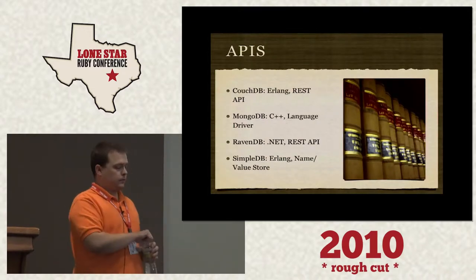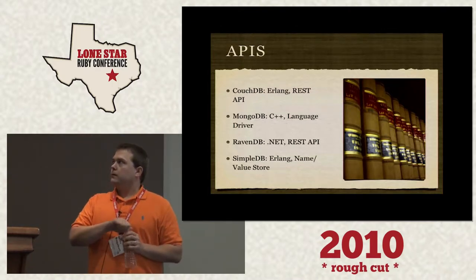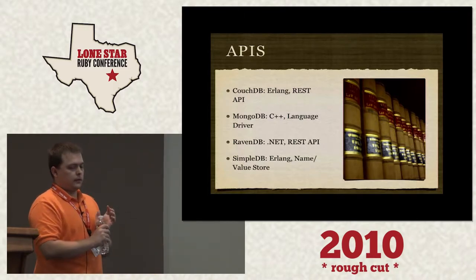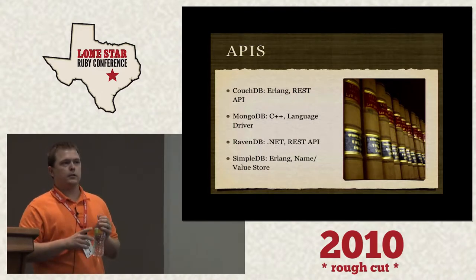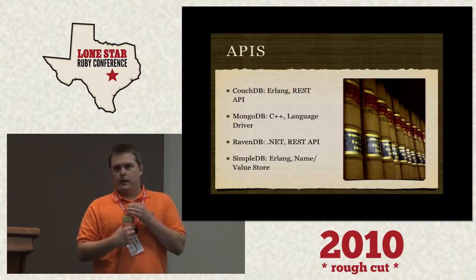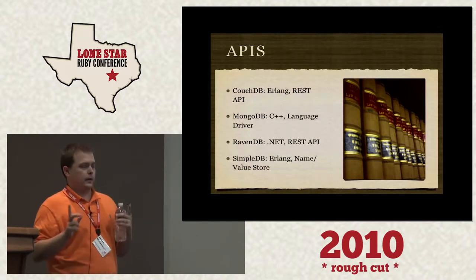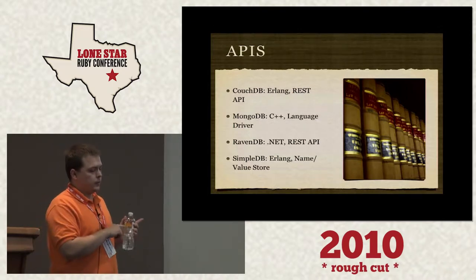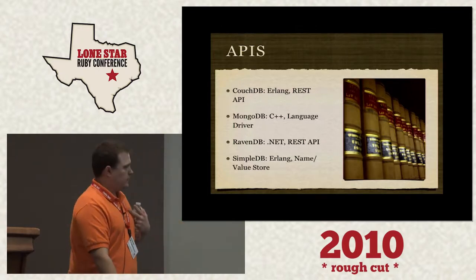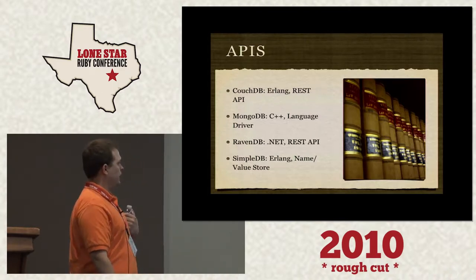The APIs themselves: CouchDB's API is a full REST API, and it was written in Erlang. MongoDB is C++, and each connection to it is language dependent. RavenDB is a .NET system — it runs on Windows and has both a .NET API and a REST API. SimpleDB is written in Erlang, and it's a name-value store with a SOAP interface and what I'm going to call a REST-unlike API.